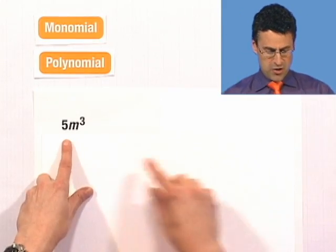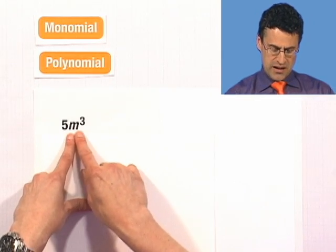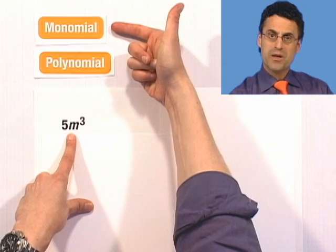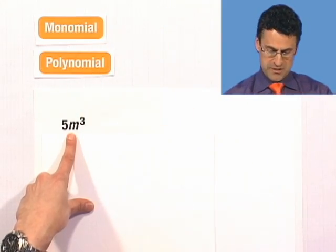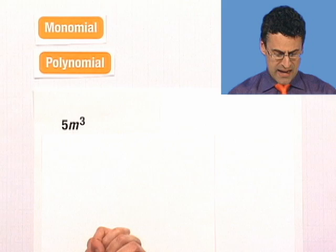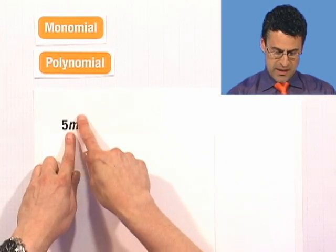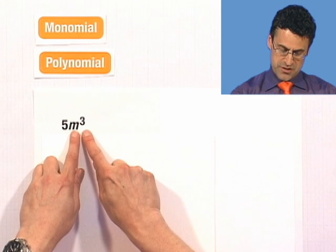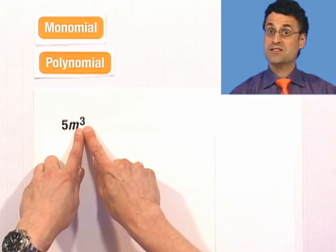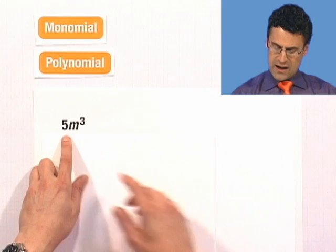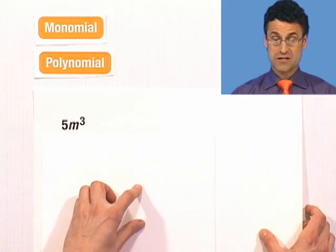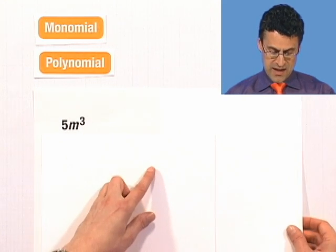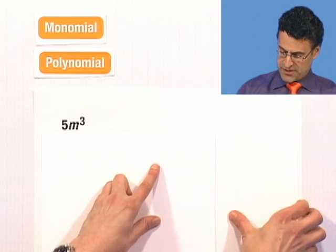So here's a polynomial, and notice there's only one term here, 5 times m³, which means that this is actually an example of a monomial. It's a very special polynomial, just one term, there's no other terms. So all you do is you look at that and you look at the exponent, and that exponent represents the degree. So this person right here has degree 3. Don't be fooled by 5. 5 is an example of a coefficient, but the degree is going to be the highest power that we see. In this case, there's only one power we see, and that is 3.